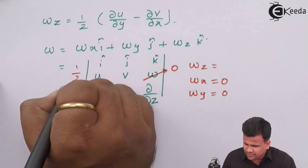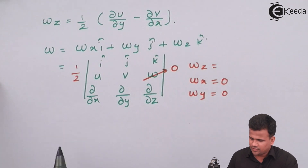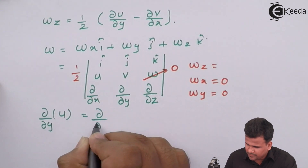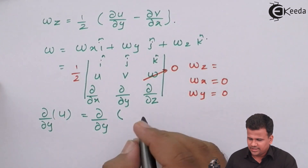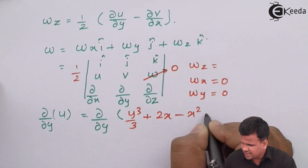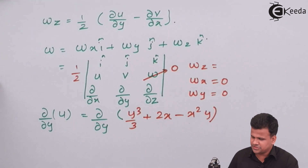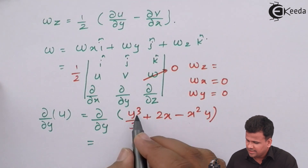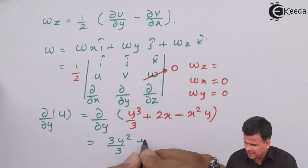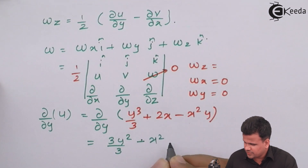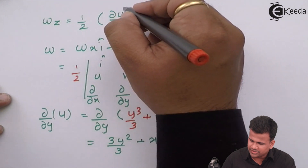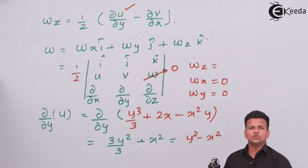Let us calculate ∂U/∂y: that is ∂/∂y of (Y³/3 plus 2X minus X²Y). If you differentiate with respect to Y, we get 3Y²/3 minus X², which simplifies to Y² minus X². So we have found the first term, ∂U/∂y equals Y² minus X².